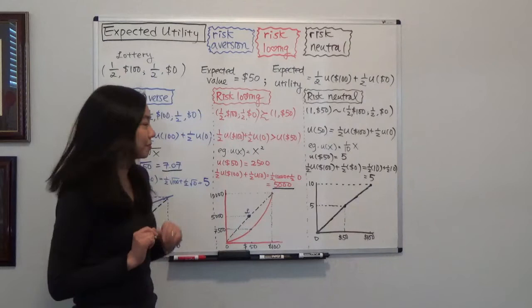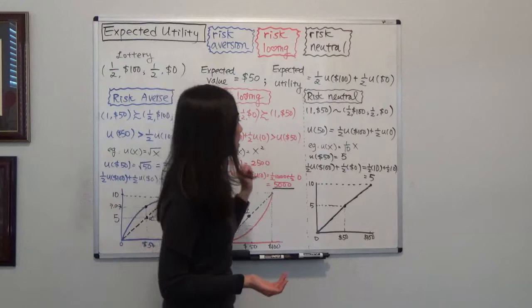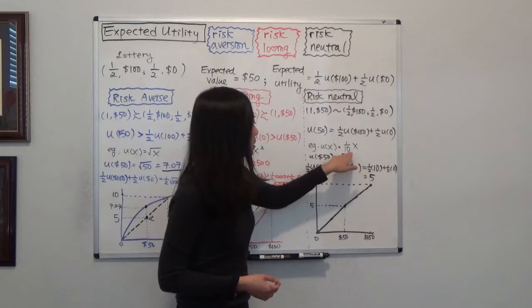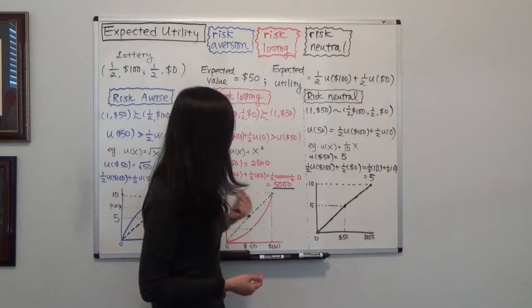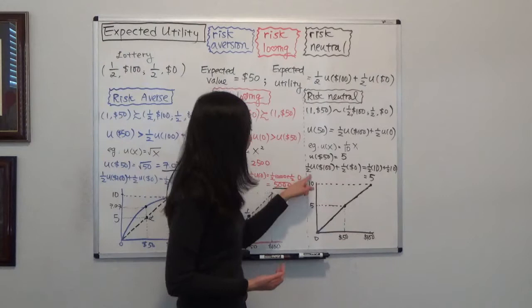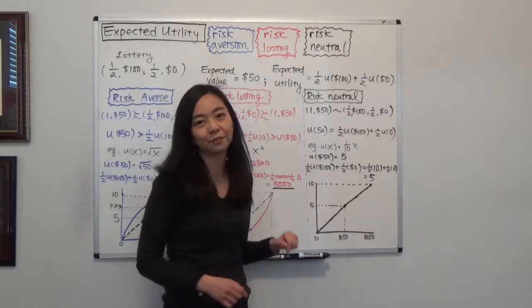Finally, if you're indifferent between $50 for sure and playing the lottery, you are risk-neutral. That means the utility of $50 is exactly the same as the expected utility of the lottery. Our example is u(x) equals one tenth times x — any linear function works. The utility of $50 is 50 divided by 10, which equals 5. The expected utility of the lottery is one half times 10 plus one half times 0, which also equals 5. Since 5 equals 5, you are neutral between the two options.